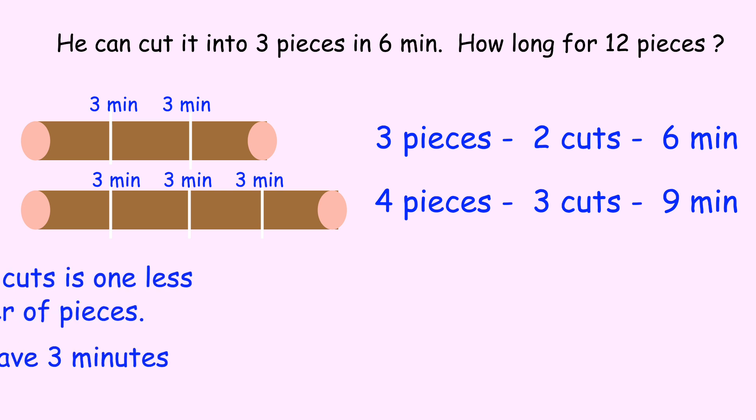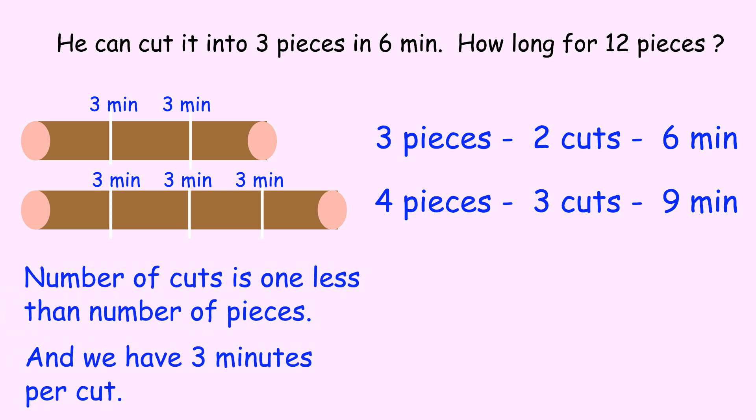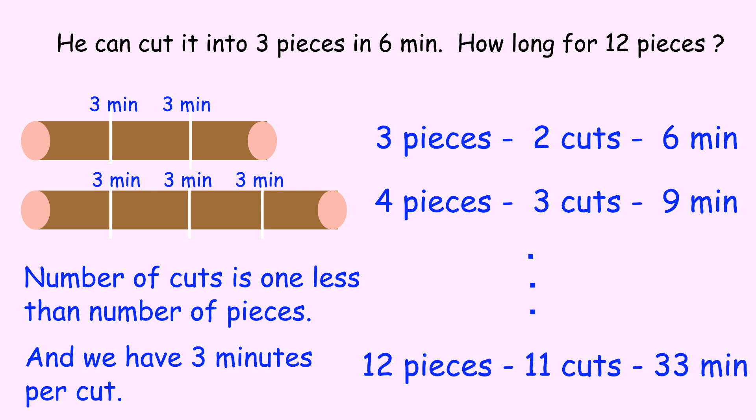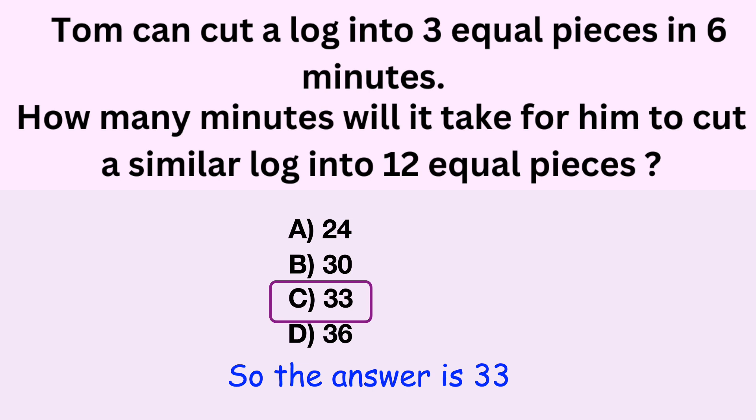So first, let's notice that the number of cuts is always 1 less than the number of pieces. And we have 3 minutes per cut. So if we go to 12 pieces, we must have 11 cuts, and at 3 minutes per cut, we must have 3 times 11, or 33 minutes. So the answer is actually C, 33.